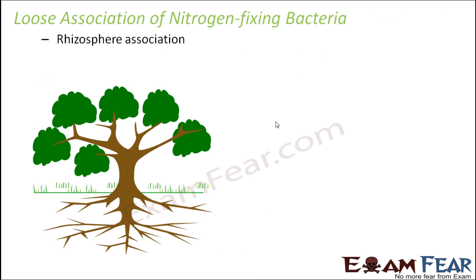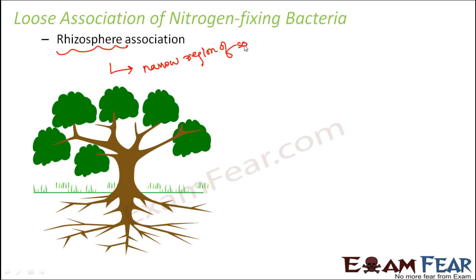Now let's move on to the next category, which is loose association of nitrogen fixing bacteria. In this type, the bacteria do not establish an intimate relationship with the plant. They just stay in the soil somewhere around the plant roots, with no physical association. This is referred to as a loose association. One example is the rhizosphere association. The rhizosphere is a narrow region of the soil influenced by soil microorganisms and root secretions, and it contains many bacteria.